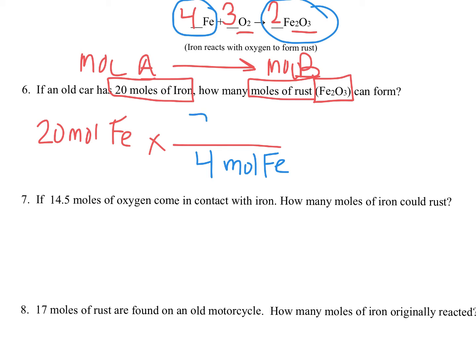Remember, I'm going to put moles of iron on the bottom so they can cancel out the moles of iron I started with. And there's a four next to iron in the balanced equation. And I'm going to use two moles of rust on top because the rust, Fe2O3, is what I'm solving for. Notice, though, when we do the work properly, moles of iron cancel out and we're left with the moles of rust, which is what we need.